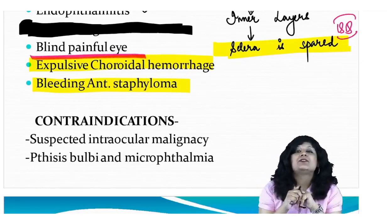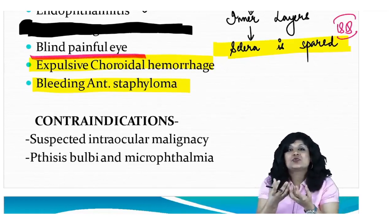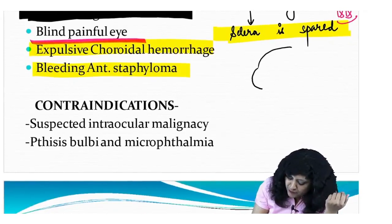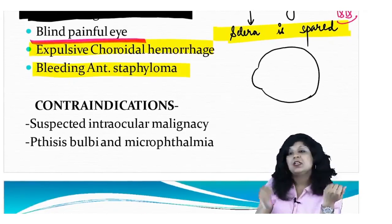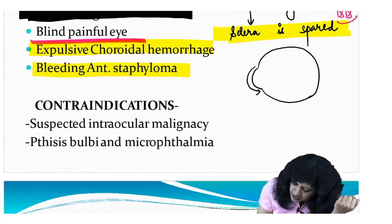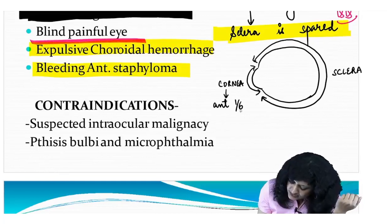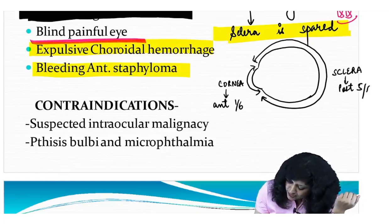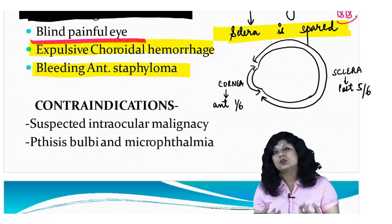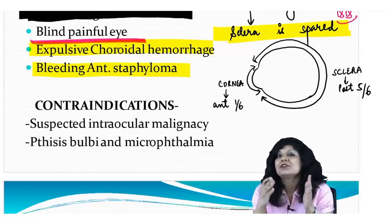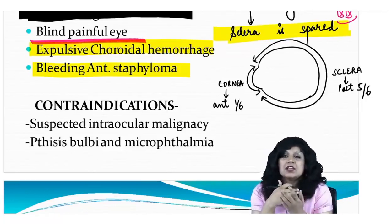Staphyloma is the ectasia of the outer tunic of the eyeball — the fibrous coat consisting of the cornea (anterior one-sixth) and the sclera (posterior five-sixth). Whenever there is ectasia of this outermost coat, it is called staphyloma. There are different kinds of staphyloma, which will be covered in a separate video.